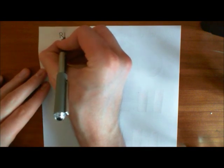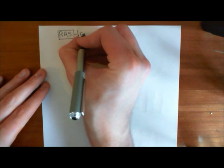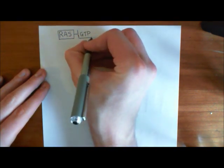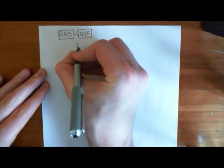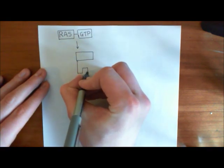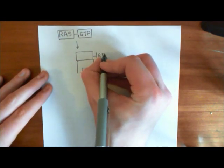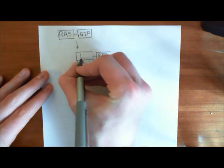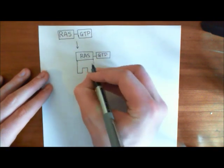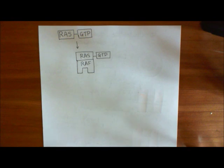RAS-GTP goes and activates an enzyme known as RAF kinase. So RAS-GTP binds to RAF kinase, and RAF is a kinase enzyme, meaning it adds phosphate groups onto other proteins. Before RAS-GTP binds to it, RAF is inactive, but when RAS-GTP binds, it activates the RAF kinase.